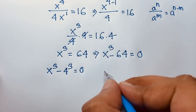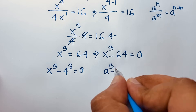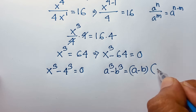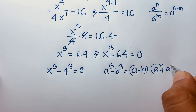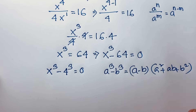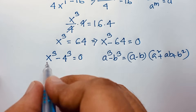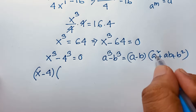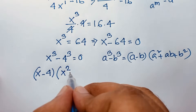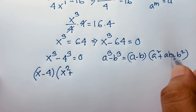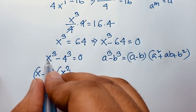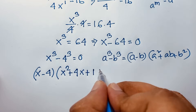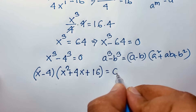Now I move the 64 to this side: x to the power 3 minus 64 equals 0. This is a cube minus b cube. Applying the formula a cubed minus b cubed equals (a minus b)(a squared plus ab plus b squared), it becomes x minus 4 times x squared plus x times 4, which is 4x, plus 4 squared, which is 16, equals 0.